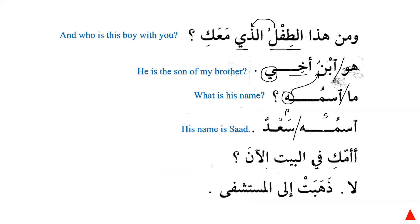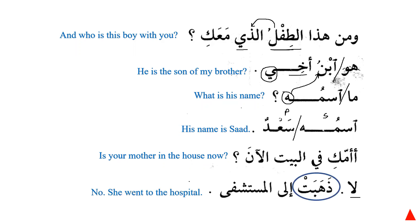A-ummuki fil bayti al-ana — 'Is your mother in the house right now?' La, zahabat ilal mustashfa — 'No, she went to the hospital.' Zahabat is used for the singular feminine third person. Zahaba means 'he went'; zahabat means 'she went.' Similarly: jalasa — 'he sat,' jalasata — 'she sat'; kharaja — 'he left,' kharajat — 'she left.' In the past tense, adding ta-as-sakin at the end makes the verb feminine. This applies to any past tense verb: zahaba, kharaja, raja'a — add ta-as-sakin to make it feminine.